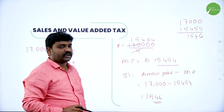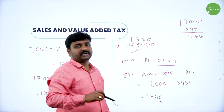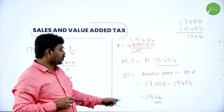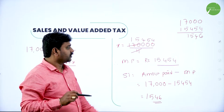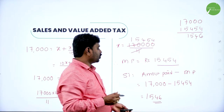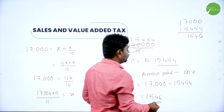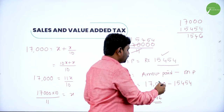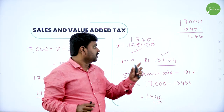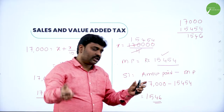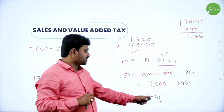So rupees 1,546 is the sale tax he paid. When you add 1,546 to the market price, it becomes the total amount paid. They had not given market price, so we calculated it from the total amount paid of 17,000. Removing market price 15,454 gives the remaining amount as tax. For market price 15,454, paying tax of 1,546 rupees gives the total amount. This is the sale tax paid.